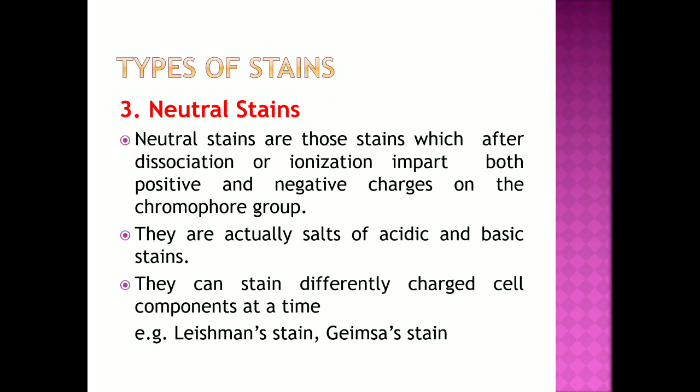Neutral stains are those stains which after dissociation or ionization impart both positive and negative charges on the chromophore group. They are actually salts of acidic and basic stains. They can stain differently charged cell components at the same time. Examples of neutral stains are Leishman's stain, Giemsa stain, etc.